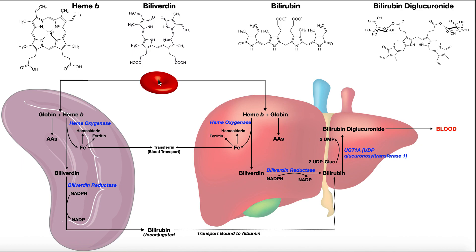The red blood cell is degraded by either the spleen or the liver via a specialized set of cells called the reticuloendothelial system, and both of these tissue types have it. The red blood cell is broken down into hemoglobin, and then the hemoglobin is broken down into its two components. The globin part is easy to deal with — that's protein, so it's degraded by proteases into individual amino acids, which are either metabolized for energy or recycled for other purposes. Globin degradation occurs in both the spleen and the liver.